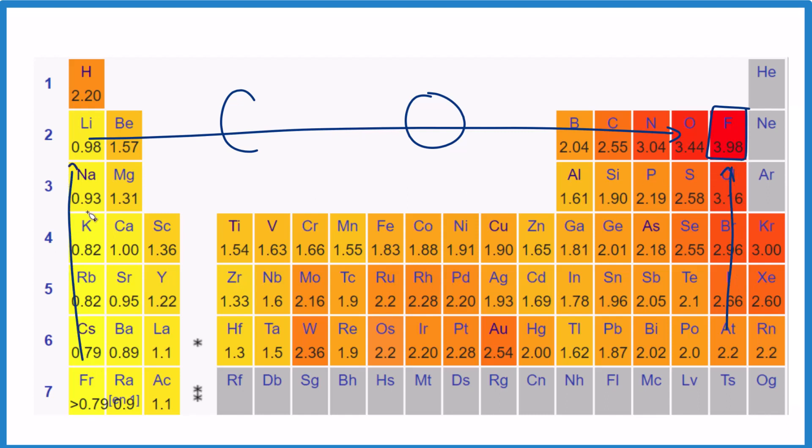Same here, as we go up, they increase. So if you know that fluorine is the most electronegative element, whatever is closest to fluorine is going to be more electronegative.